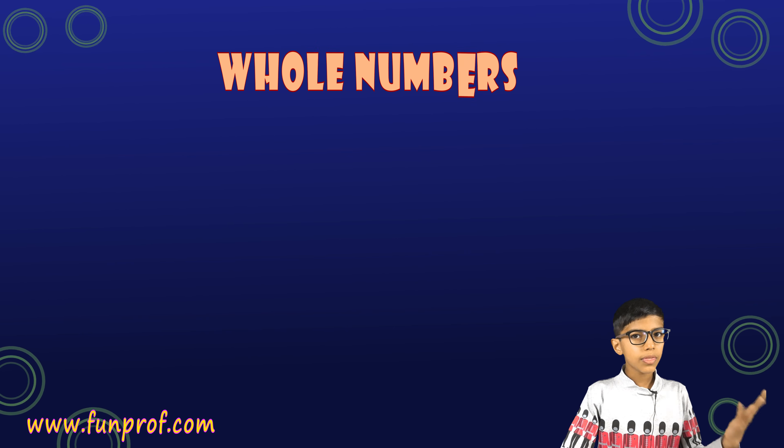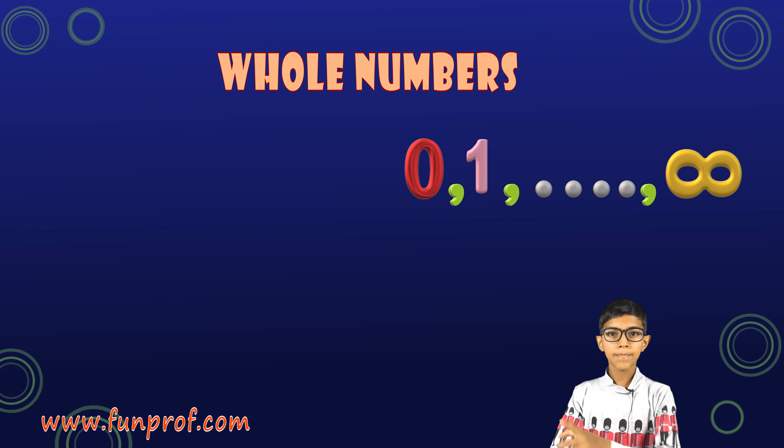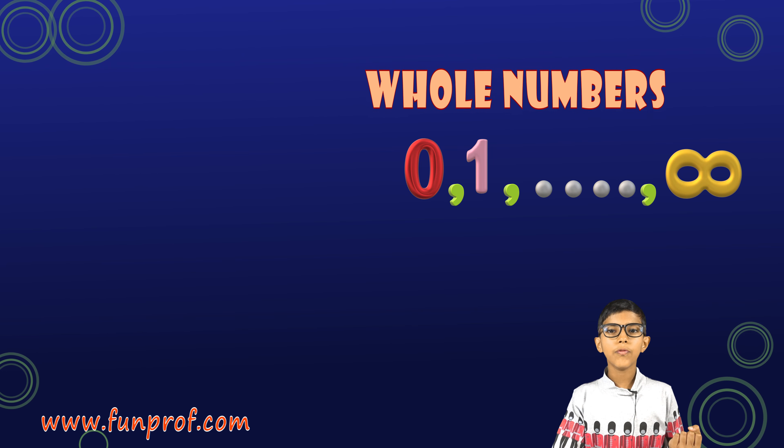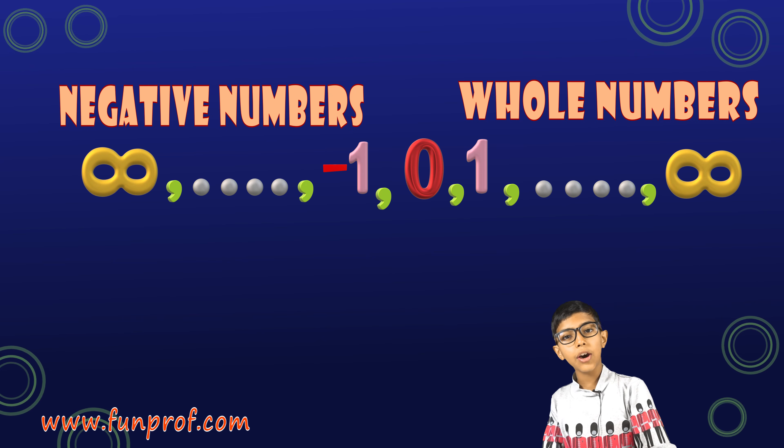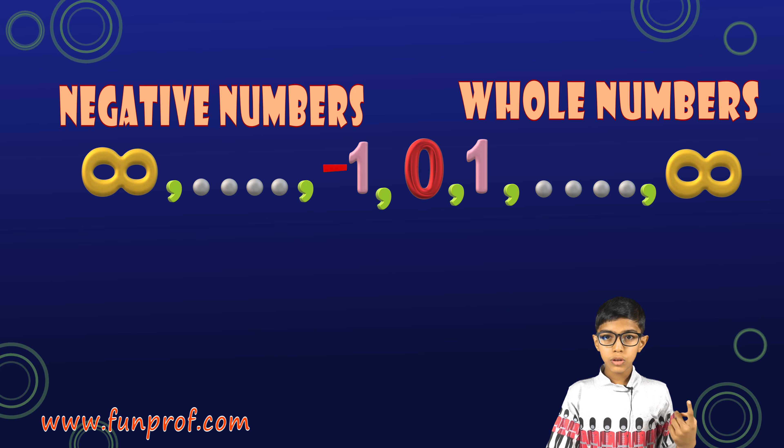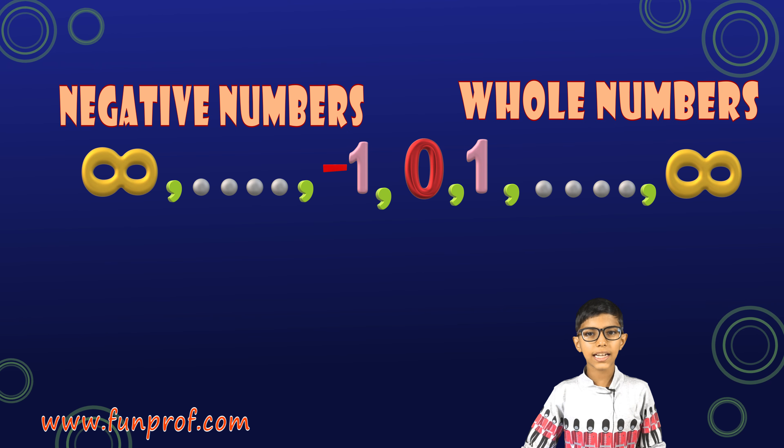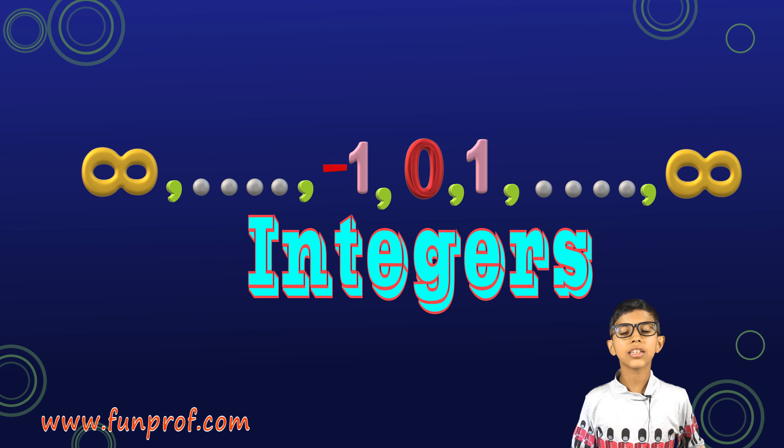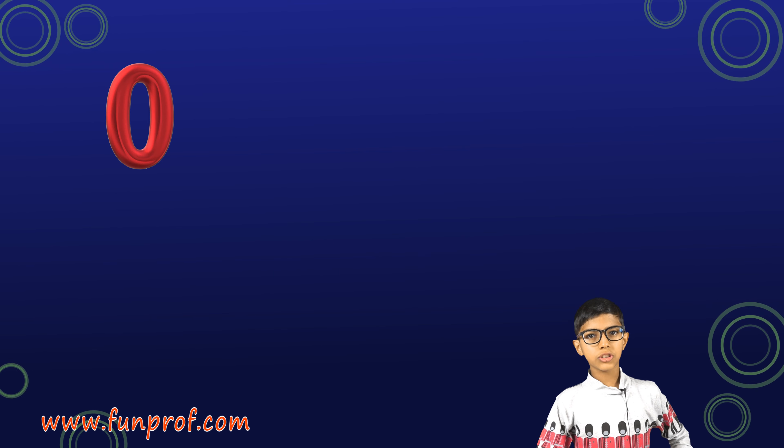The next one is whole numbers. When we include 0 in the set of natural numbers, we get whole numbers. Now, when we add the set of negative numbers and the whole numbers, this set is called the set of integers. In this class, we learn about that only.